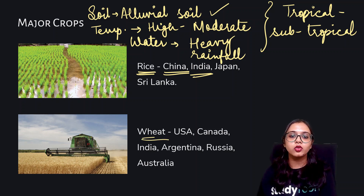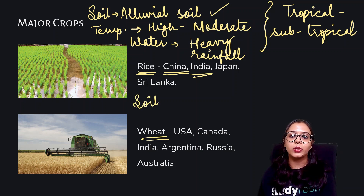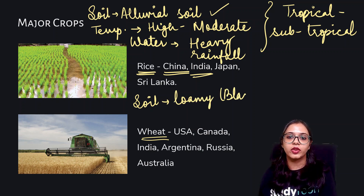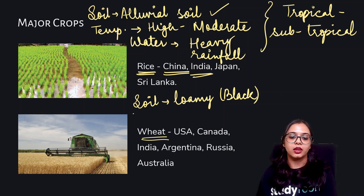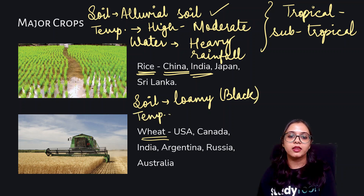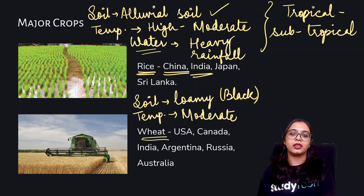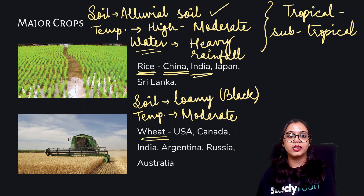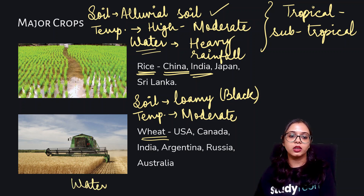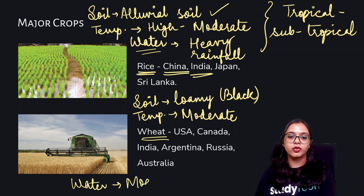When talking about wheat, the kind of soil it needs is black soil, which is favorable for wheat. The temperature it needs is moderate — not too high. The amount of water that wheat needs is also moderate. So both the temperature and water content that wheat needs for its growth are moderate.